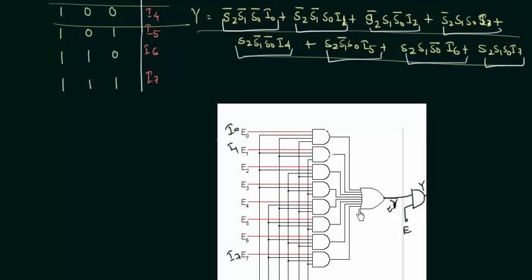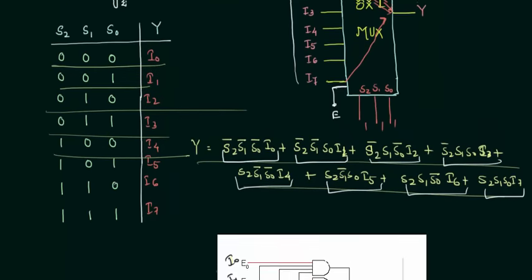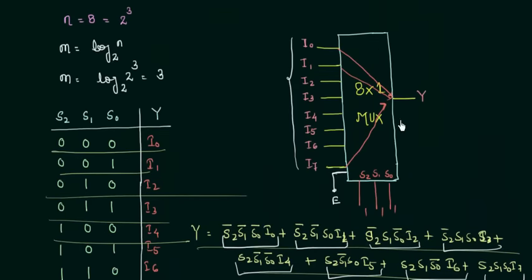And the output of these AND gates is going to the OR gate. So, this is very simple thing, very similar to your 4x1 multiplexer. The only difference is the number of select lines and the input. Rest of the things are same. The approach is very much same.